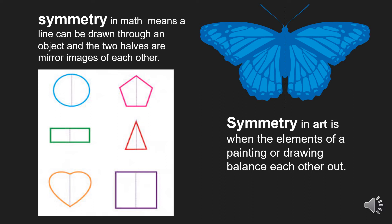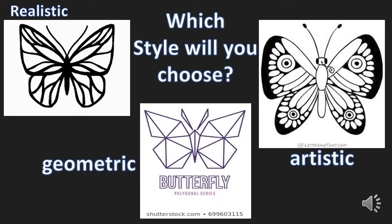Symmetry in art is when the elements of a painting or drawing balance each other out. In art, it doesn't necessarily mean they look exactly the same — sometimes it means the weight looks the same or the color is balanced out. But we're going to go for the math and art base of symmetry, where both sides of the butterfly look the same.